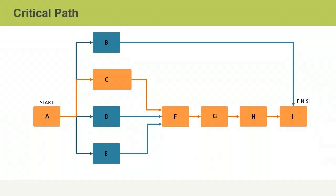The critical path method is used to calculate the minimum total project duration, based on estimates of how long critical activities will take to complete. In a schedule network diagram, the longest full path of activities that must be performed in sequence is known as the critical path. The estimated durations of the activities on this path represent the shortest time in which a project can be completed. If any of the activities on the critical path aren't completed on time, all of the activities that follow it will run late too.